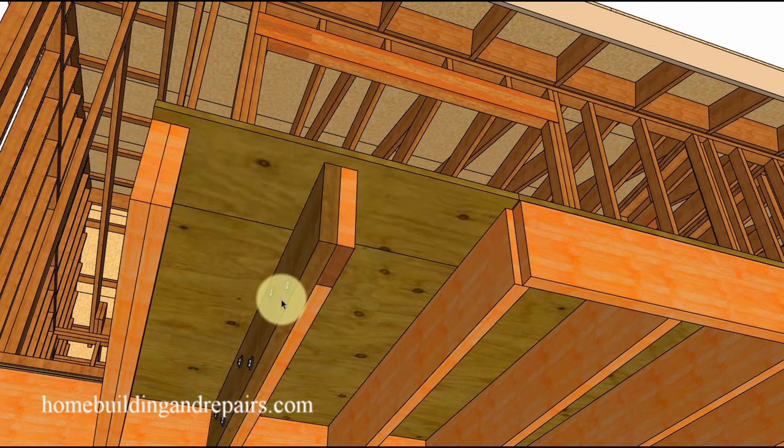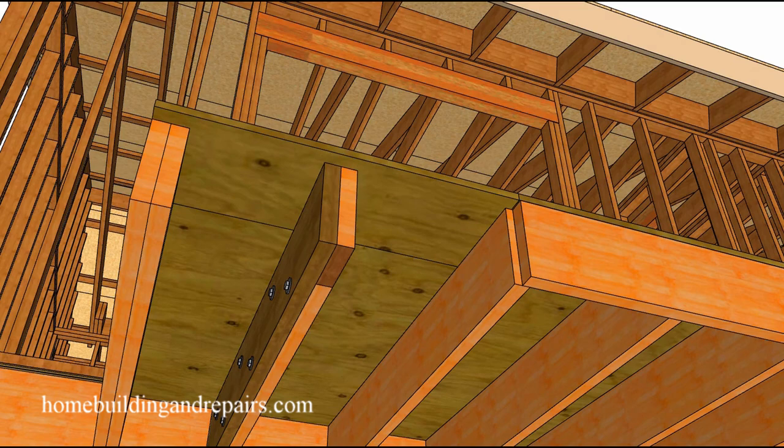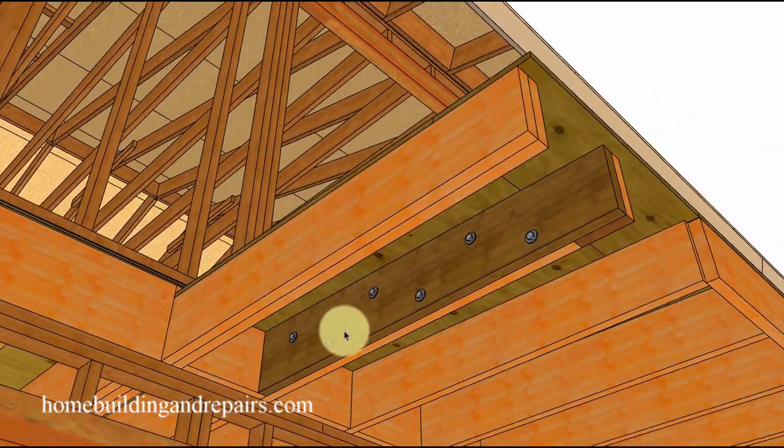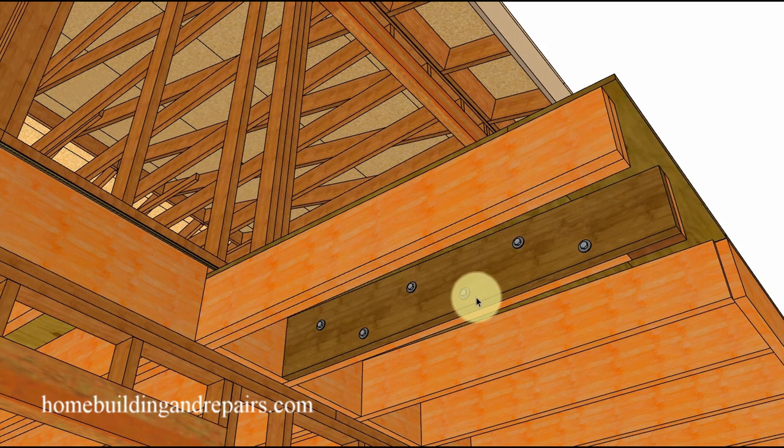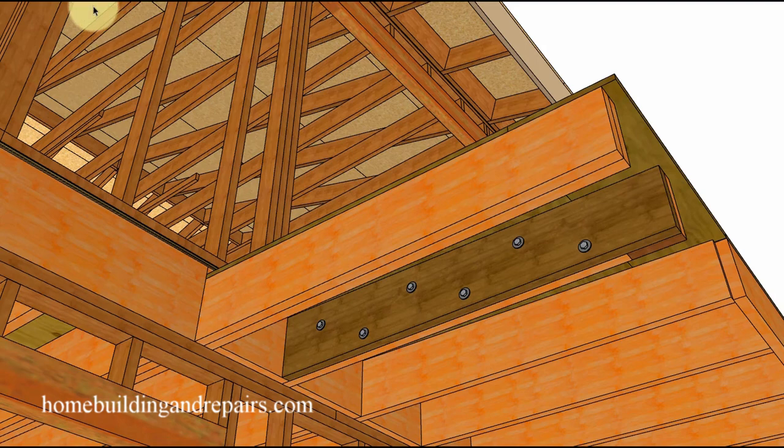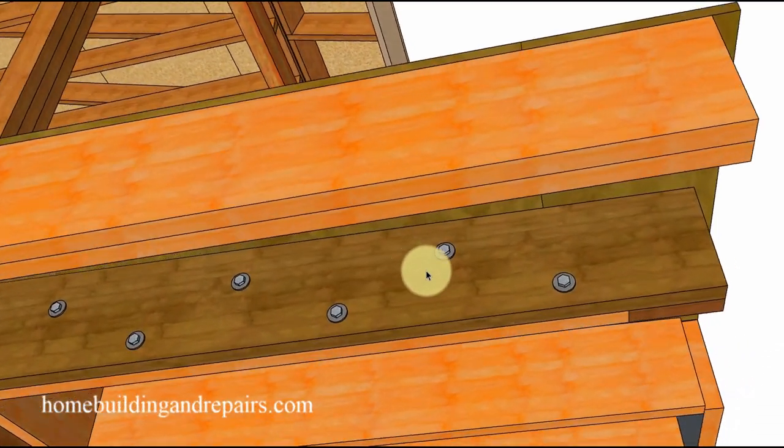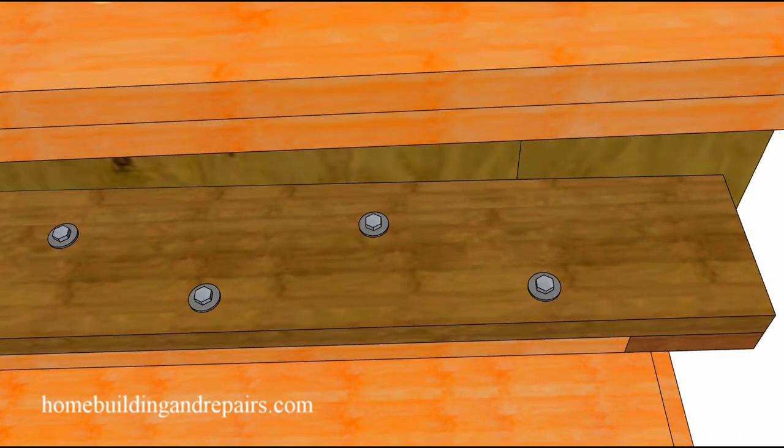The first method I would suggest would be to cut a new board and bolt it to the existing one. In this example here, we have 16 inch on centered bolts and they are staggered, and we are using three-eighths of an inch diameter bolts for this example.